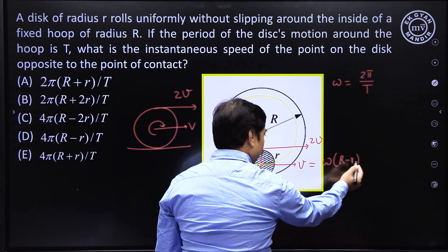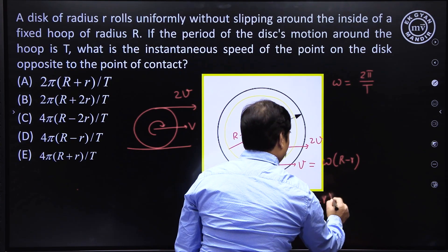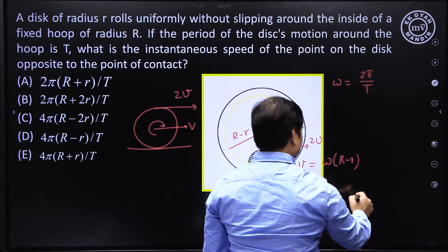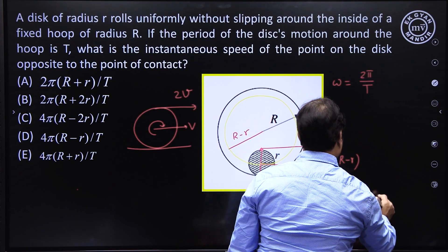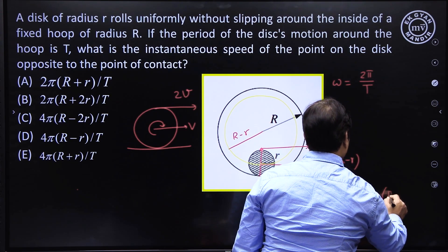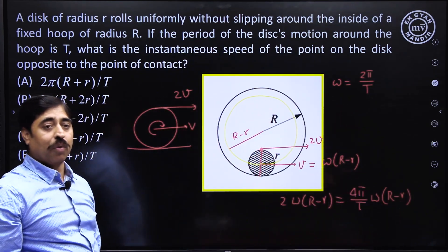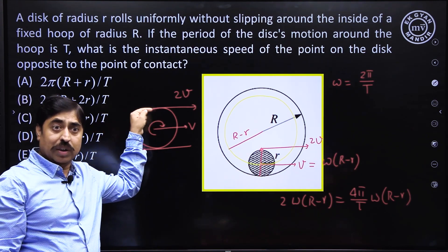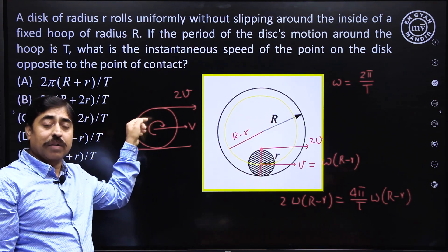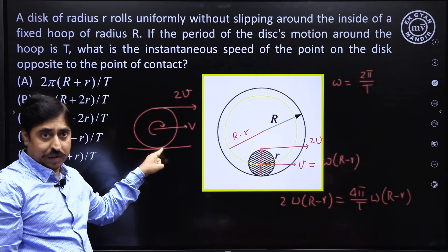V here means ω into (R minus r). Substituting ω = 2π/T, this becomes 4π(R minus r) divided by T. In the case of pure rolling — rolling without slipping — the topmost point has velocity 2v when the center has velocity v, and the contact point has zero velocity.